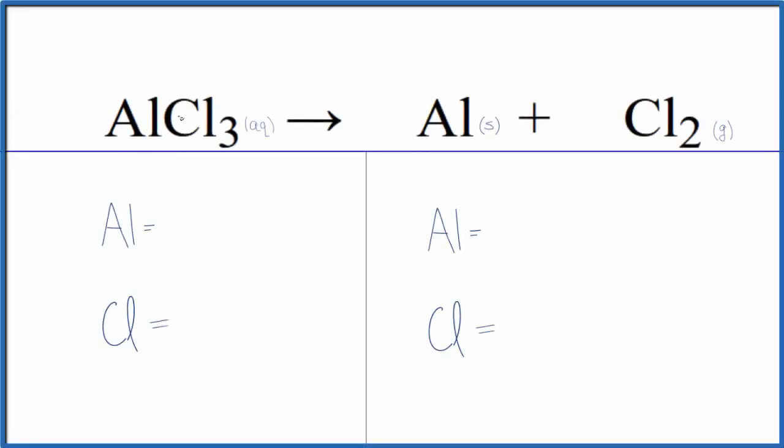In this equation, we have aluminum chloride, AlCl3, decomposing into aluminum, solid aluminum, and chlorine gas.